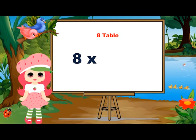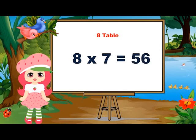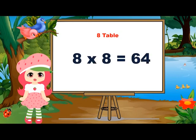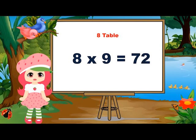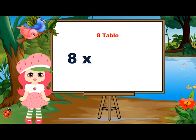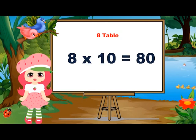Eight sevens are fifty-six. Eight sevens are fifty-six. Eight eights are sixty-four. Eight eights are sixty-four. Eight nines are seventy-two. Eight tens are eighty. Eight tens are eighty.